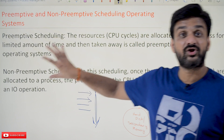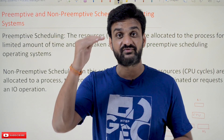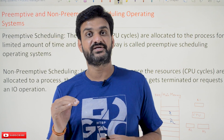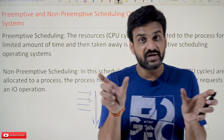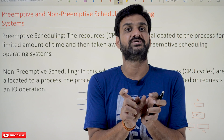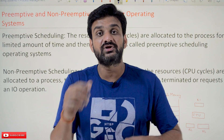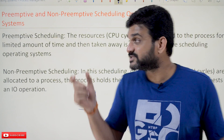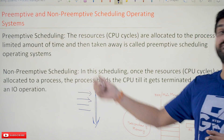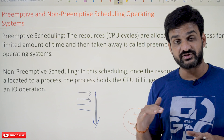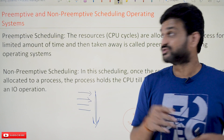Multi-programming operating systems are non-preemptive scheduled operating systems. In our previous class where we discussed types of operating systems, we discussed multi-programming but not multitasking operating systems. Multi-programming and multitasking operating systems are very similar in their way of working. The only difference is that multitasking uses preemptive scheduling whereas multi-programming uses non-preemptive scheduling.